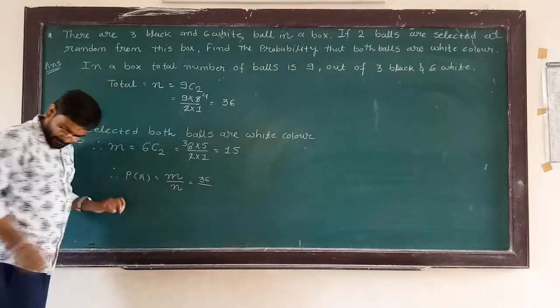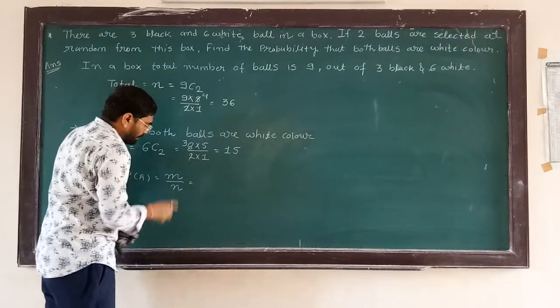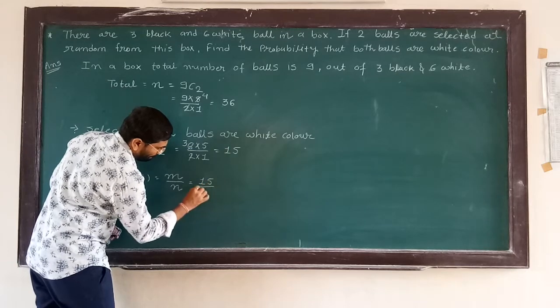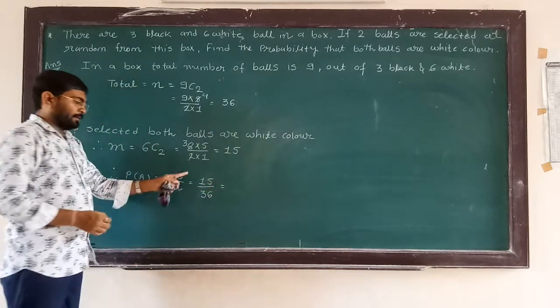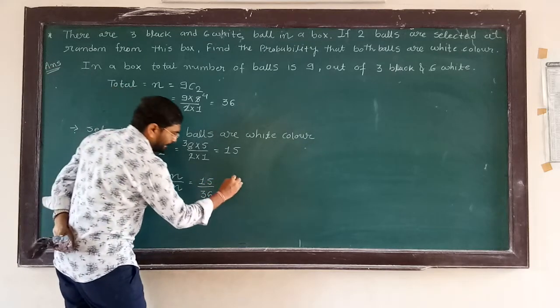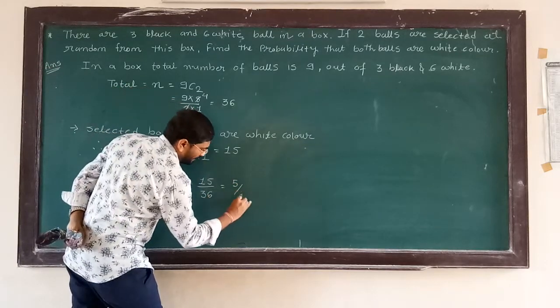M is equal to 15 upon 36, cut by 3, gives us 5 by 12.